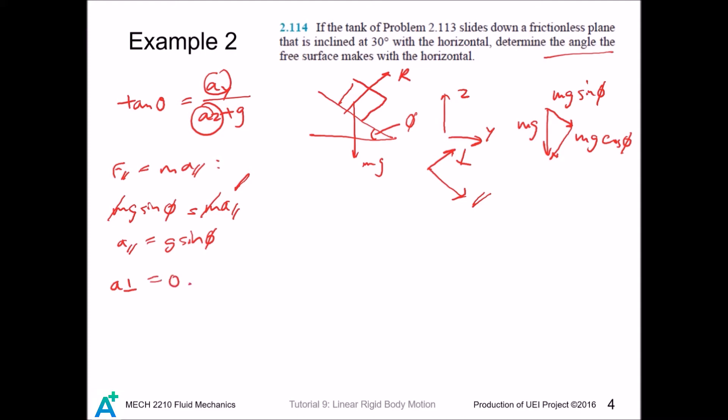We now decompose the acceleration into two components: az and ay. This angle is phi, so for ay we have a cosine phi, which is g sine phi cosine phi. For az, since its direction goes against the coordinate system we defined, that is negative a sine phi, which is negative g sine squared phi.